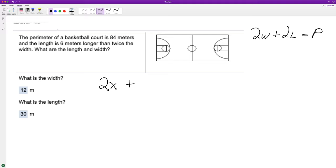And then the length is going to be equal to, so the length is twice as long as the width, but it's also six meters longer in addition to being twice as long. So 2x plus 6, and this is equal to 84.